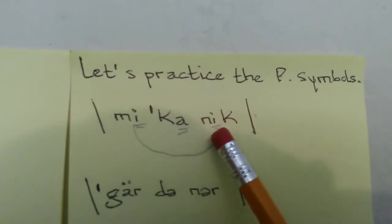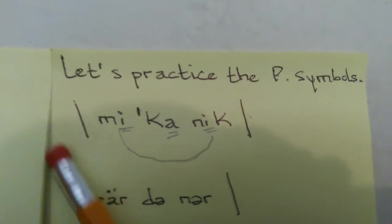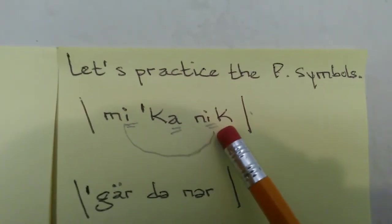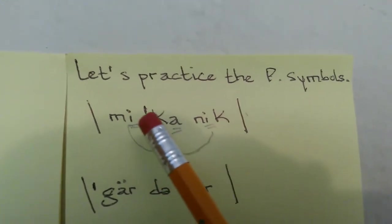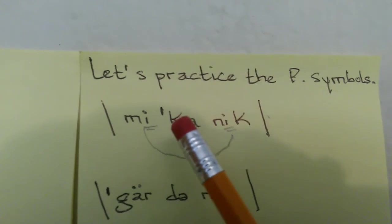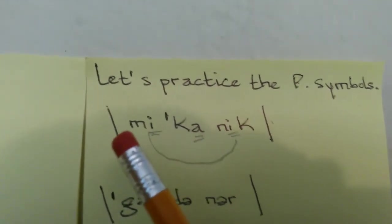So this word is 'mi', 'cat', 'nik'. And for the fact that you see the stress mark here, it means that 'cat' has to be pronounced higher than 'mi' and 'nik'. So the word is 'mechanic'.